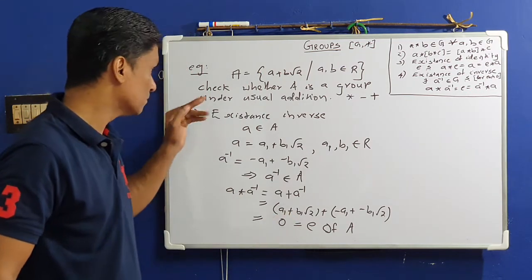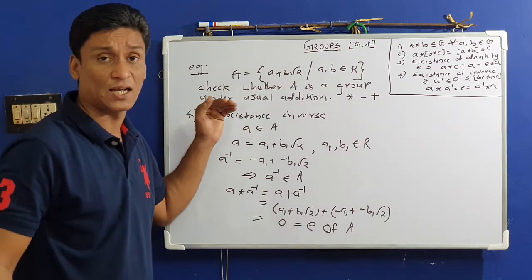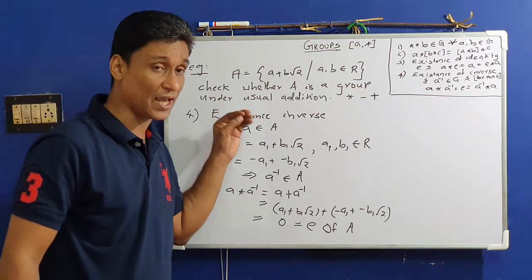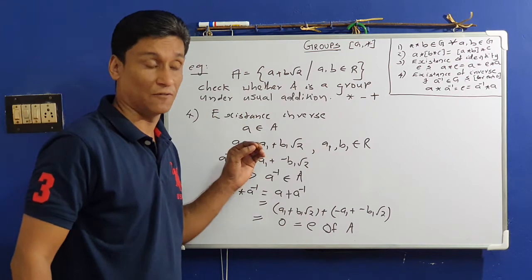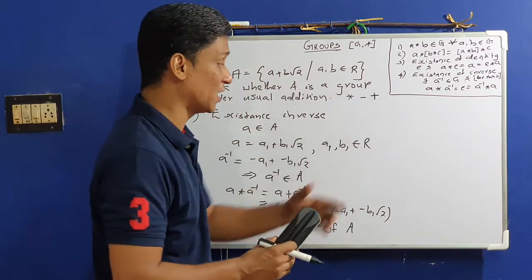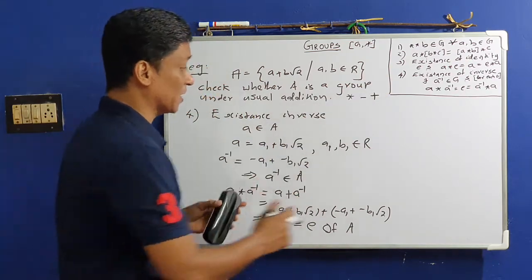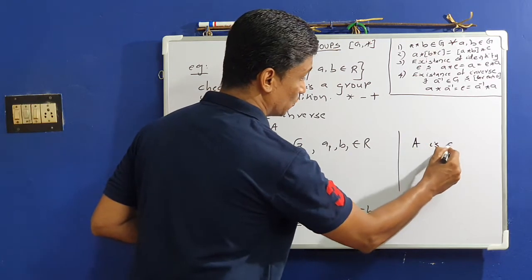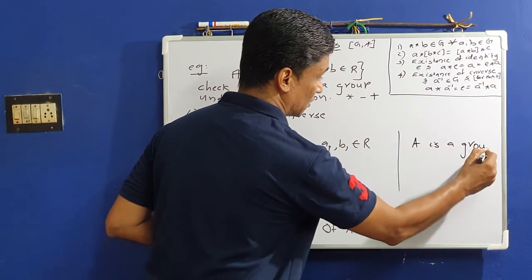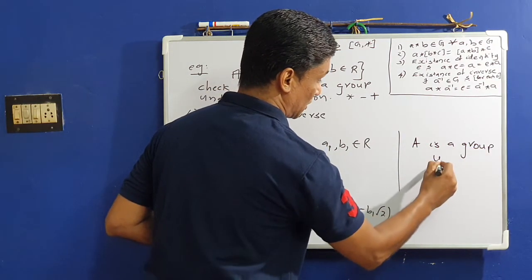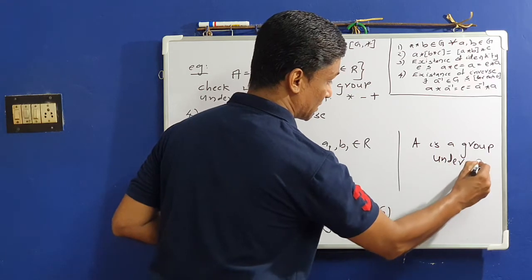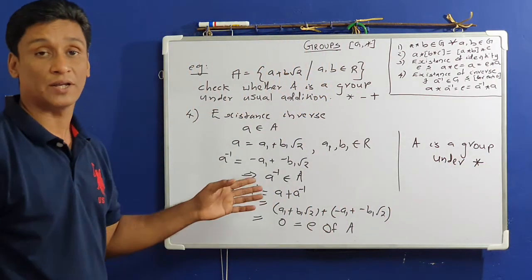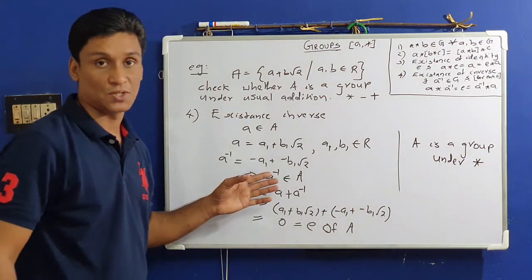Since all four conditions are satisfied, the set A is a group under the operation star, which is the usual addition of real numbers.